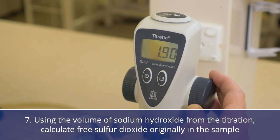Using the volume from the titration, calculate free sulfur dioxide originally in the sample.